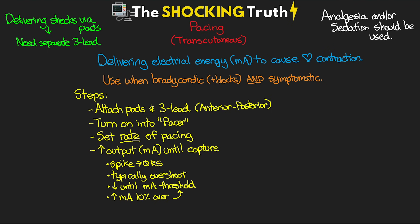Once the patient is pacing with the rate set and capture achieved, set the mode: either asynchronous or demand pacing. Asynchronous mode delivers the shock at the specific rate you've set regardless of the patient's underlying rhythm. In demand mode, the defibrillator only delivers pacing shocks when the patient's heart rate drops below the set rate, watching the rhythm and pacing only until the rate comes back up. To summarize the pacing steps: attach pads and three-lead, turn on into pacer mode, set your rate, increase output until capture, dial back to threshold and increase by 10%, then set your mode.